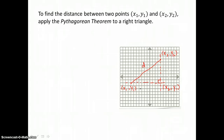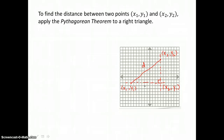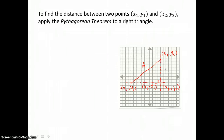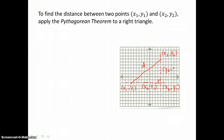The length of the horizontal leg of this right triangle can be found by taking the difference in x coordinates: x sub 2 take away x sub 1. And the length of the vertical leg can be found by taking the difference in y coordinates: y sub 2 take away y sub 1.